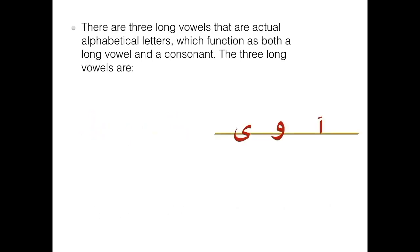There are three long vowels that are actual alphabetical letters which function as both a long vowel and a consonant. The three long vowels are: 'a', 'e', and 'o'.